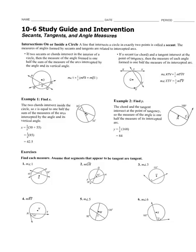Today we are doing Lesson 10-6 on Secants, Tangents, and Angle Measures. This is from the McGraw-Hill Geometry book. We're going to talk about intersections that are on the circle or inside the circle today.